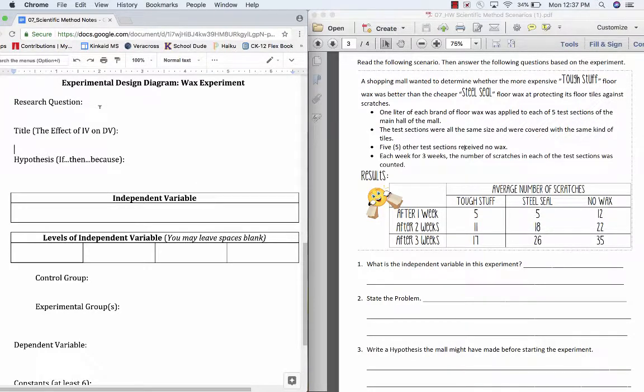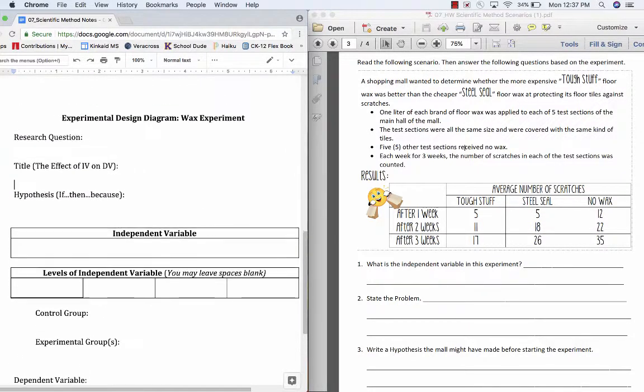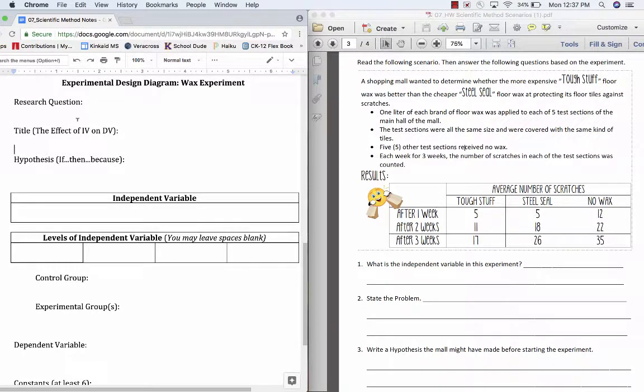When we take stories and try to fill out our EDDs regarding the story, we first start with the research question. Just like in English and writing conventions, a question is going to end with a question mark. So this is simply, what question was the experimenter trying to answer? In this, it seemed as though the shopping mall wanted to determine which floor wax was better. So we could just say, which floor wax is better? Question mark. Simple enough.